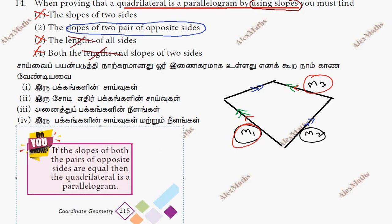We have to say: if the slope of both pairs of opposite sides are equal, it is a parallelogram. So the slope of both pairs — two pairs of opposite sides — are equal. The correct option is option 2.